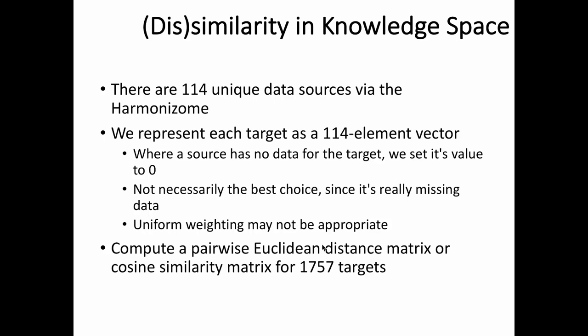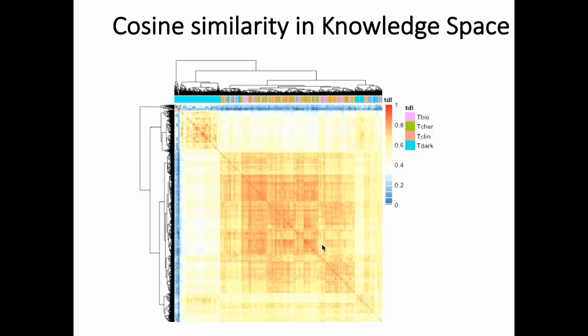Using these vectors we computed a pairwise Euclidean distance matrix and cosine similarity matrix for about 1,700 targets in what we're calling knowledge space. The similarity matrix shows expected clustering: TDar targets tend to cluster together, and there is some weaker clustering including TBio, TChem, and Tclin. This clustering could be a starting point for further investigations.